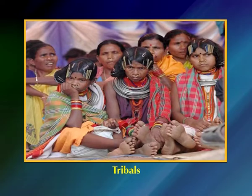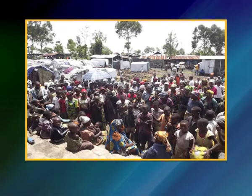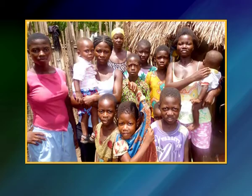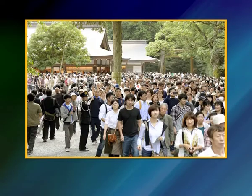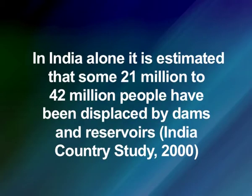Quite often the native people of the project site are directly affected. These native people are generally the poorest of the poor — underprivileged tribal people. Millions of people are being displaced from their native places annually. Movement of people can either be forced or voluntary. Studies show that the majority of displaced people belong to poor and marginalized communities, and within them women and children experience special vulnerabilities. In India alone, it is estimated that some 21 to 42 million people have been displaced by dams and reservoirs.